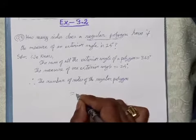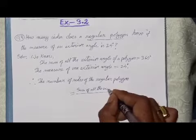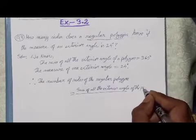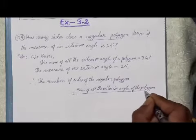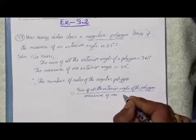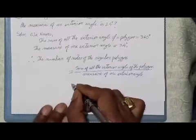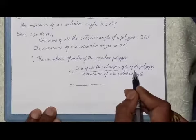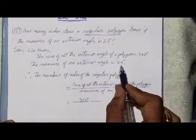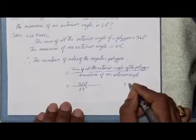Therefore, the number of sides of the regular polygon is equal to the sum of all exterior angles divided by the measure of one exterior angle. That is 360 degrees divided by 24 degrees. Now let's divide 360 by 24.